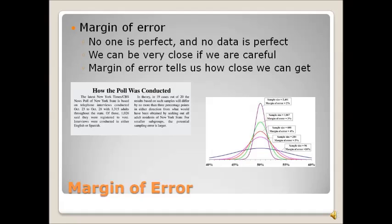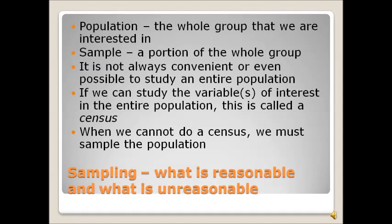Being able to find the balance between an appropriate sample size and an appropriate margin of error is one of the things that's really important for researchers. So the whole group that we're interested in is called the population. A portion of that group is called the sample. It's not always convenient or even possible to study an entire population because they can just be too big. Now, if we can study the variables of interest in the entire population, this is called a census.